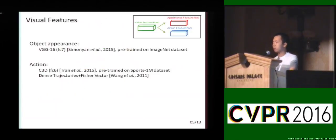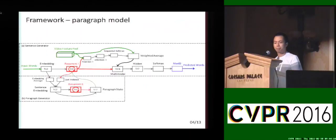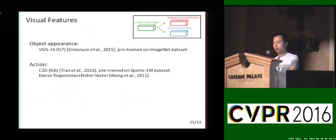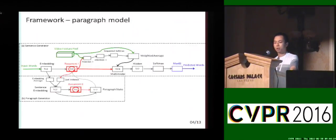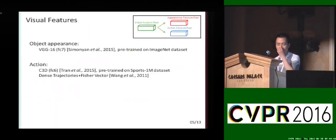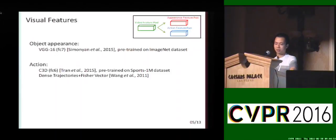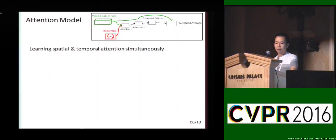Looking at the details of the framework: although I only draw one video feature pool here, it actually consists of two features — the appearance feature and the action feature. Both feature pools go through the same attention process, except with different sets of parameters, and we end up with two weighted average features input to the multi-modal layer. For object appearance we use VGG16, and for action we use either C3D or dense trajectories plus spatial vector.